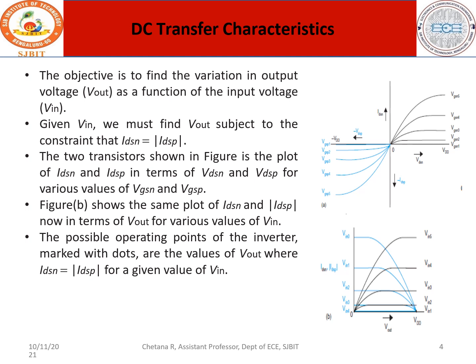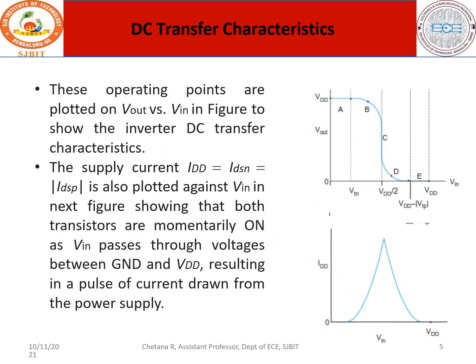The possible operating points of the inverter, marked with dots, are the values of Vout where IDSN equals IDSP for a given value of VIN. You take the intersecting points of the curves — VGS1 with respect to PMOS and NMOS — and these intersecting points are considered. Once you take the intersecting points, you get a curve, and these operating points are plotted to form the DC transfer characteristics.